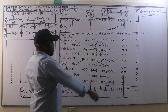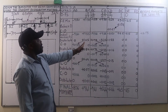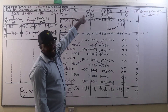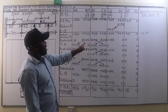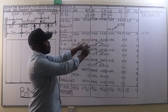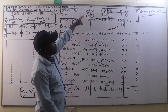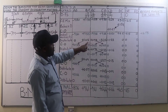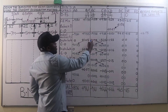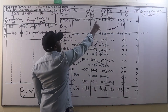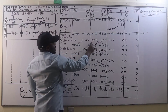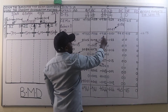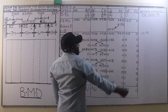That 2.73 we distribute on each member using the distribution factor. On member BA we have 2.73 times 15/29, which is 1.05. On member BC we have 2.73 times 14/29, which is 0.98. Then at joint C the excess moment will be determined.